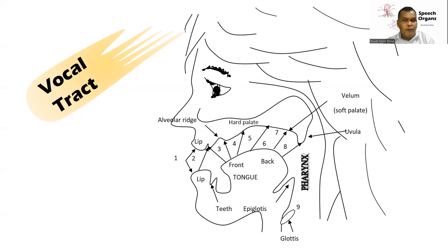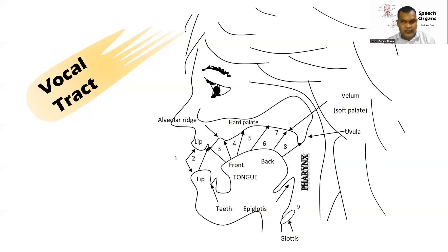The middle part of our tongue is called the blade of the tongue, and the back part of our tongue is called the root of the tongue. So we have three parts of our tongue. You also have to know that lips and tongue are categorized as active articulators. Why are they called active articulators? Because they can be moved. The other organs of speech are called passive articulators — because they cannot be moved.